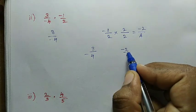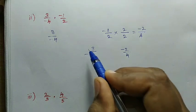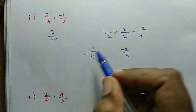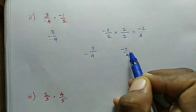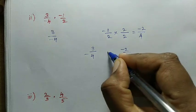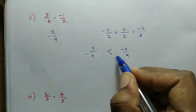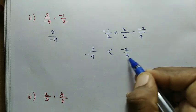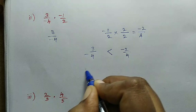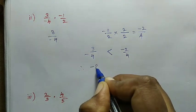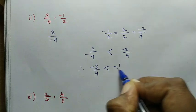Numerator values are compared. We have minus 3 and minus 2. Since minus 2 is greater than minus 3, we get: minus 3 divided by 4 is less than minus 2 divided by 4. Converting back, this means minus 3 divided by 4 is less than minus 1 divided by 2.